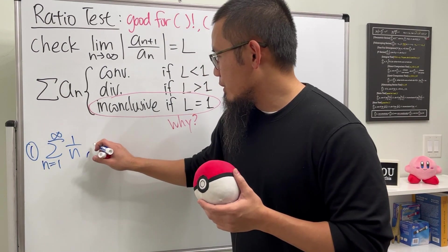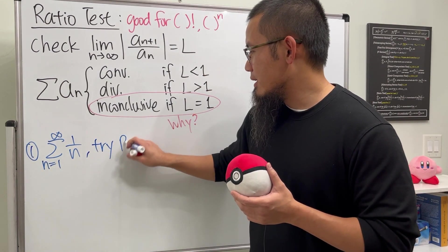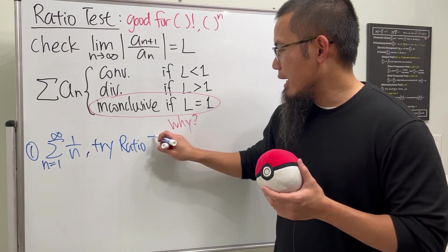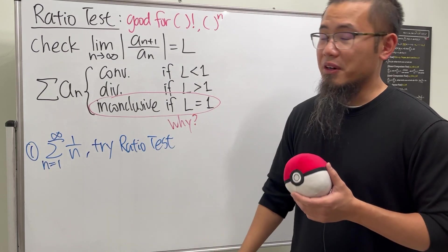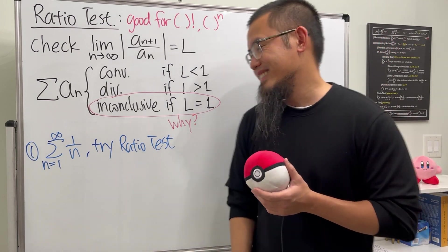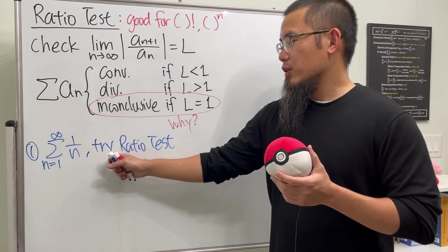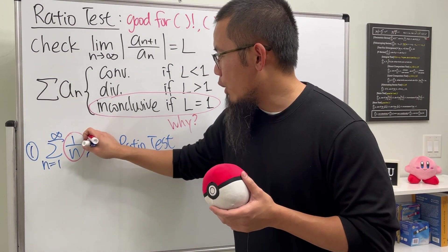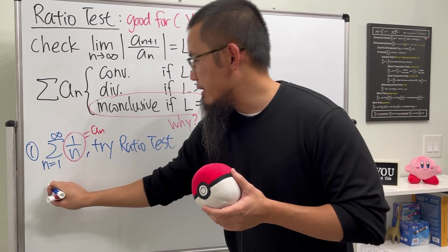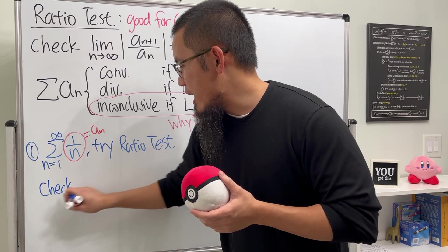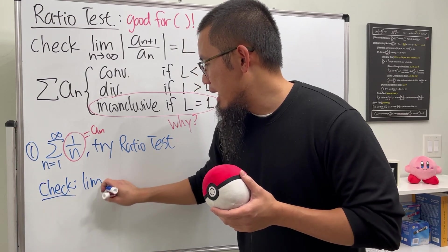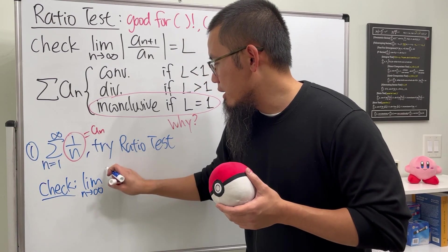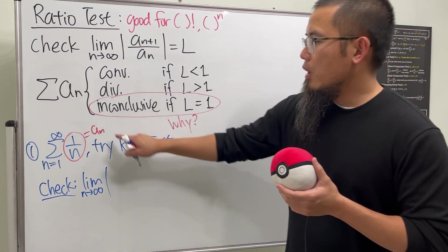So I would just say try with the ratio test. And do not abbreviate ratio test with RT because there's also the root test. But anyway, to use the ratio test what we do is this limit first. This right here is our a_n, and let's see, we are going to check the limit as n goes to infinity, put the absolute value.